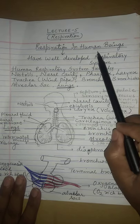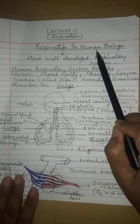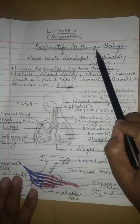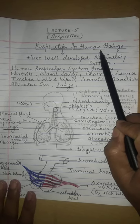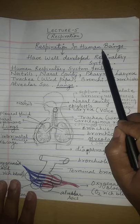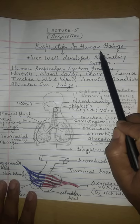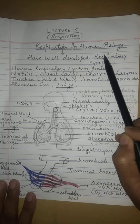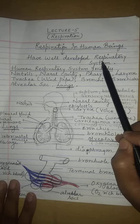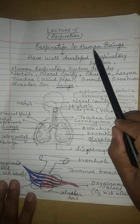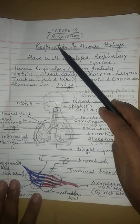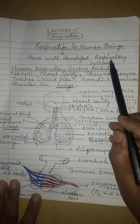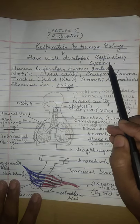Human beings are complex animals, and in their body every life activity is carried out by well-developed organ systems. In this video we will be discussing about respiration in human beings and the well-developed respiratory system they possess.